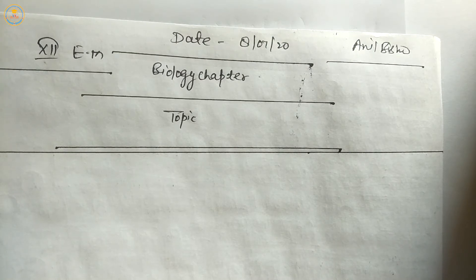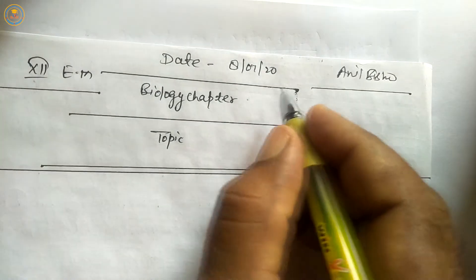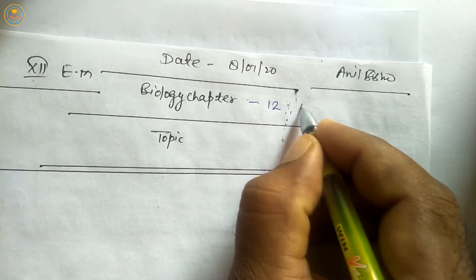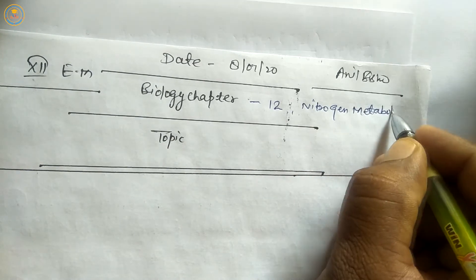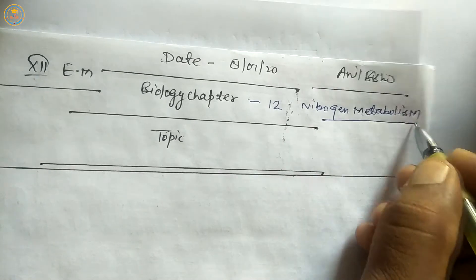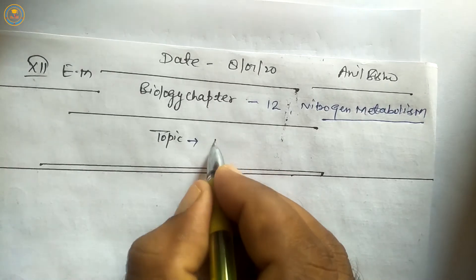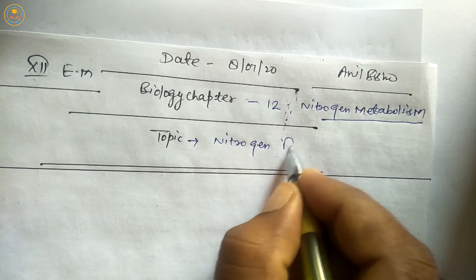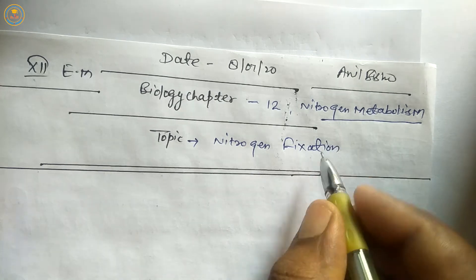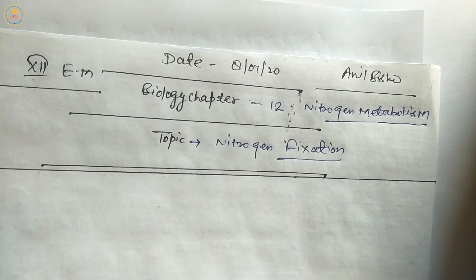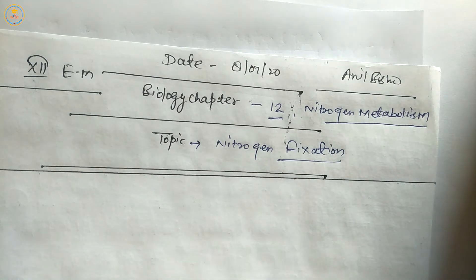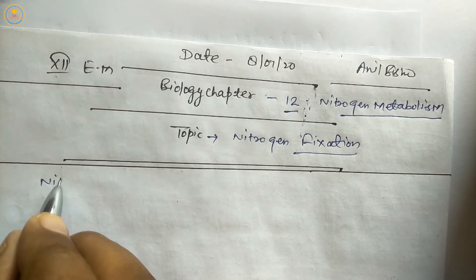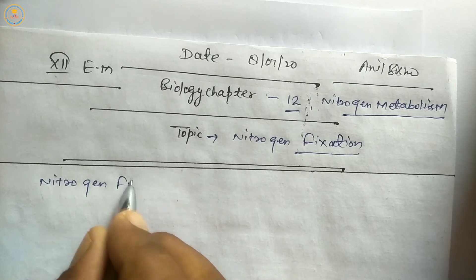Students, good morning. Today we are going to discuss Class 12th Biology Chapter 12 - Nitrogen Metabolism and Nitrogen Cycle. Today's topic is Nitrogen Fixation.